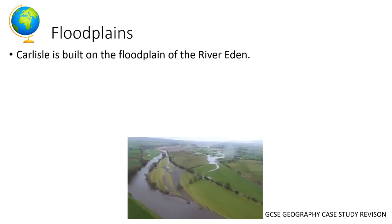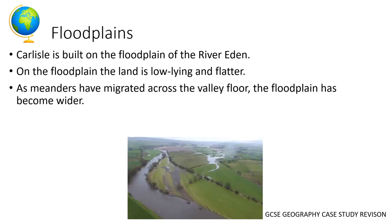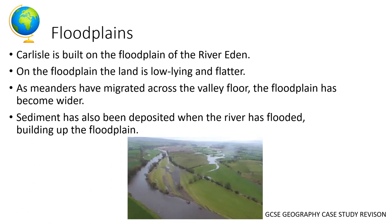Back to the lower course of the river: Carlisle is built on the floodplain of the River Eden. As a reminder, the floodplain is the flat land found either side of the river. It's created as meanders migrate across the valley floor, making the floodplain wider. Sediment deposited when the river floods builds up on the floodplain, providing flat land and fertile soils — which is why Carlisle has been built there.